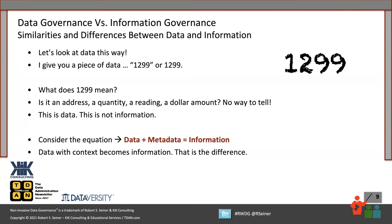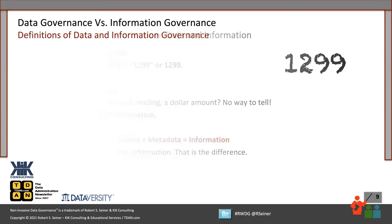If you take data and you add context to it — add the metadata to it — it becomes information. Data plus context equals information. That's the difference between data and information. Data is just the raw piece, like 1299. Once I tell you that's a dollar amount — whether $1,299 or $12.99 — that becomes a quantity or dollar amount based on the context that has now been added.